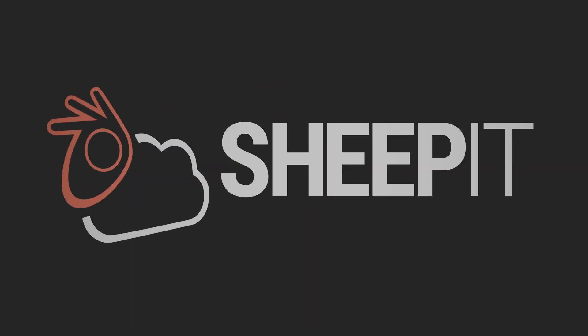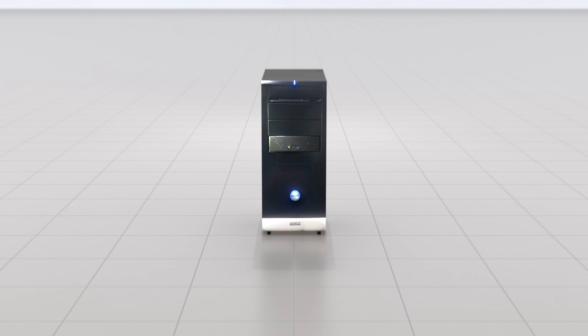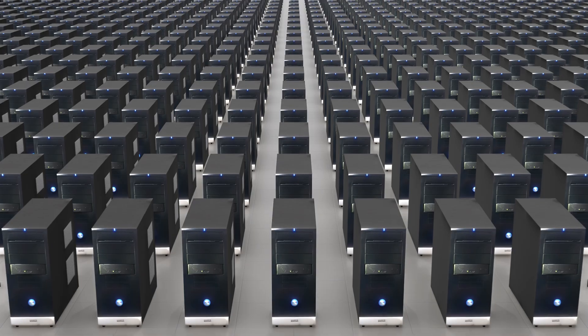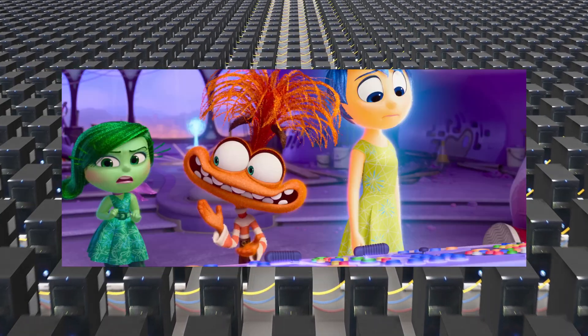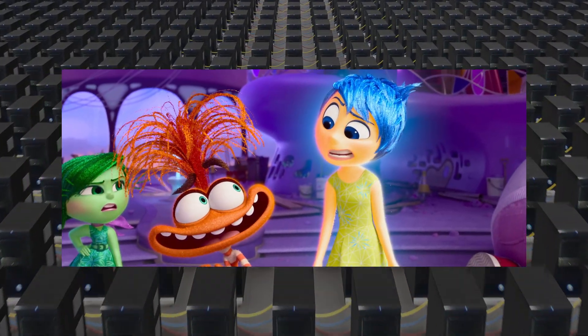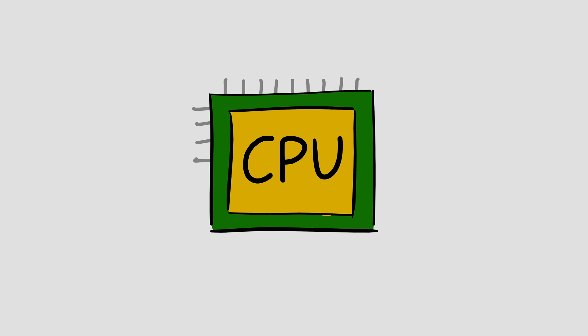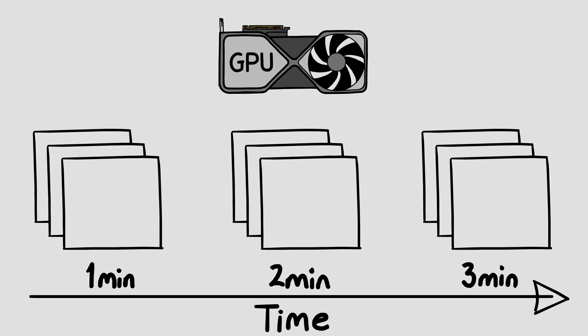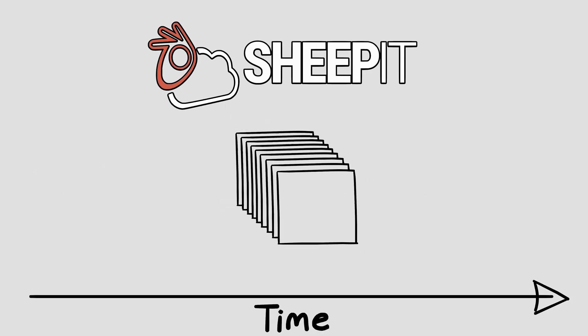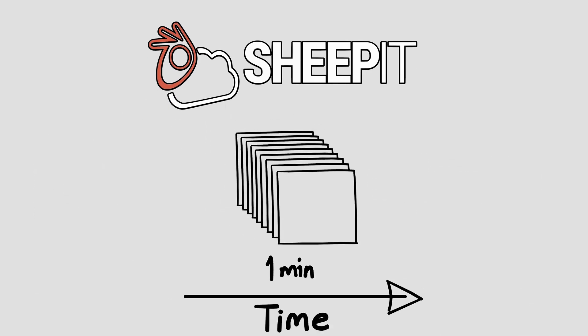If you've never heard of Sheepit, essentially what it is, is a free to use distributed render farm. A render farm is pretty much just a massive cluster of computers all hooked up and networked together to do one thing and one thing only: to render out each and every frame of an animation. A CPU can only render one frame at a time — it's sequential. A GPU steps up a notch by allowing you to render out small batches of frames one after another. A render farm takes it up to a whole new level by allowing you to render out the entire animation, every single frame, all at once.